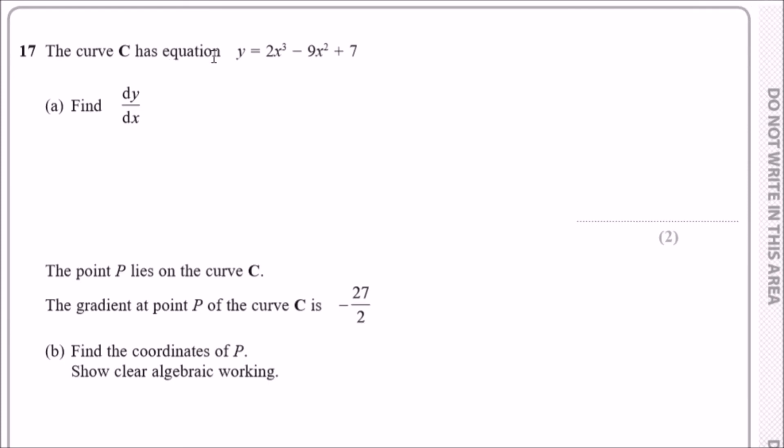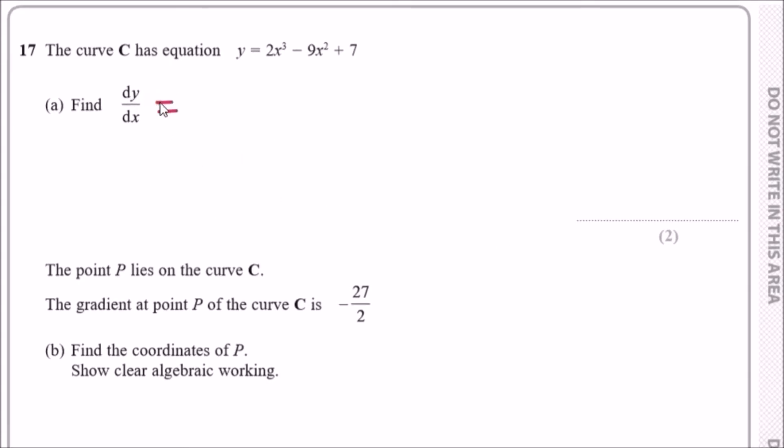We're given a curve with a cubic equation which is 2x³ - 9x² + 7, and we're told to find the first derivative, dy/dx. To do that, it's very easy—you literally just use the power rule. You look at the power, drop it down, so it'd be 3 times 2, which is 6, and then x.